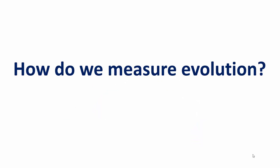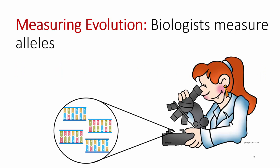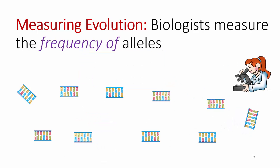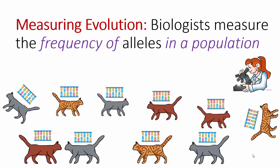So let's get back to our original question: how do we measure evolution? If evolution is defined through alleles, we're going to have to measure alleles. Specifically, we're actually going to have to count alleles and measure their frequency. And if you're going to look at the frequency, you have to have a population.